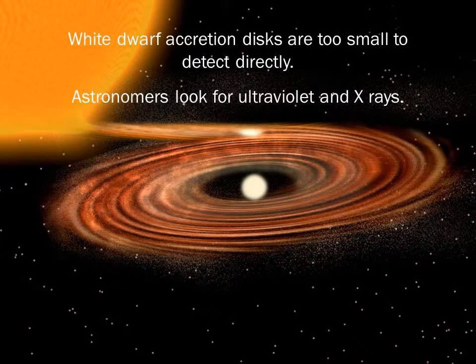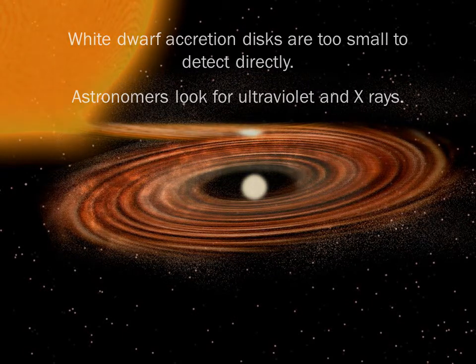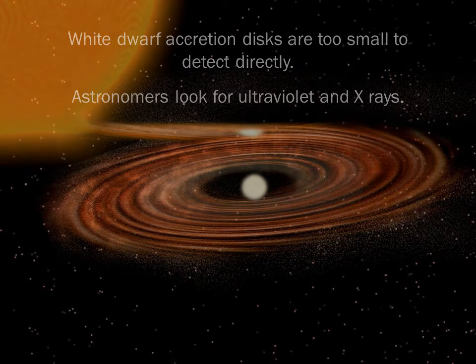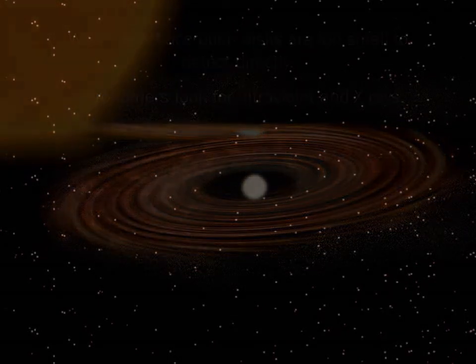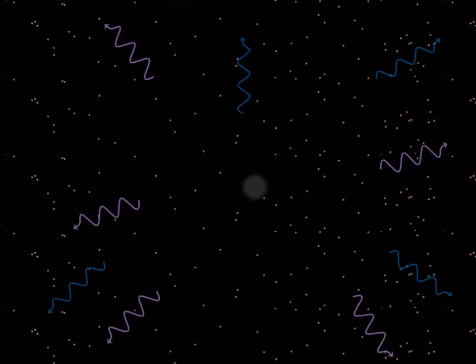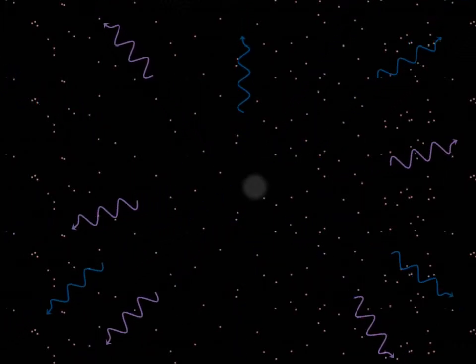We can't see these disks directly — they're too small. But we should be able to detect the intense ultraviolet or X-ray radiation. Astronomers have searched for this radiation and have found strong evidence for accretion disks around many white dwarfs via ultraviolet and X-ray observations.